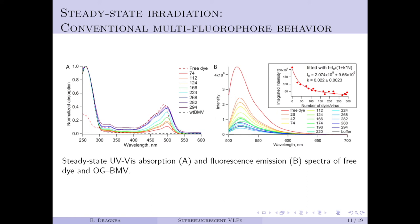Spectra acquired at different numbers of dyes are shown in graph A on the left. The spectral signature of the virus-supported dyes is very similar to that of the free dye, meaning the dyes are spaced enough relative to each other to avoid molecular aggregate formation. But the fluorescence on the right graph shows concentration quenching: with an increase in the number of dyes, the number of photons emitted decreases. This is due to dye proximity via the homo-FRET effect.